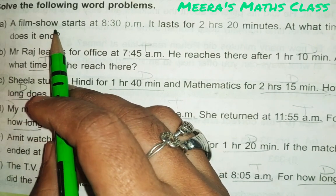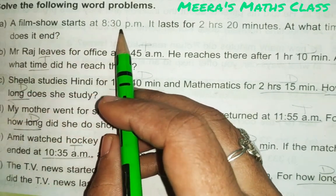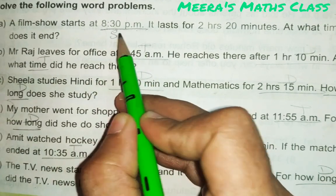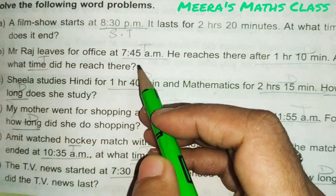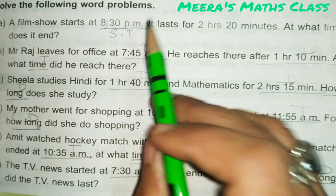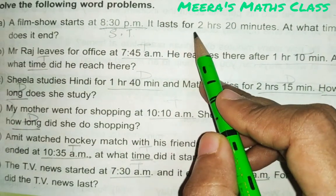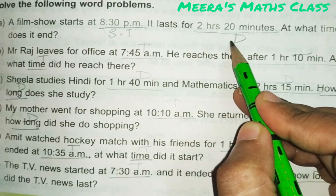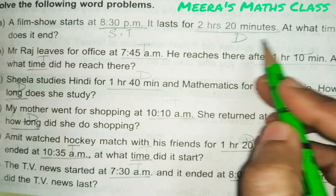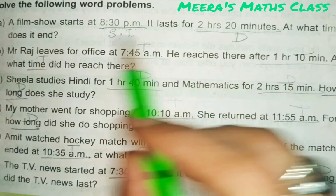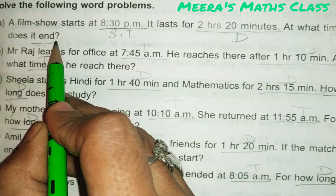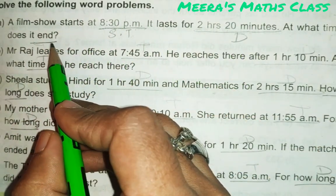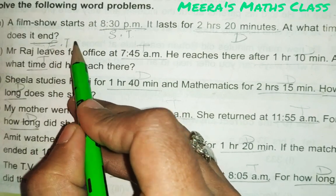Let's see the first example. A film show starts at 8:30 p.m. — this is the starting time, you can write ST as a shortcut. It lasts for 2 hours 20 minutes — underline this, it is duration, write D. At what time does it end? Two values are given and the end time is asked.